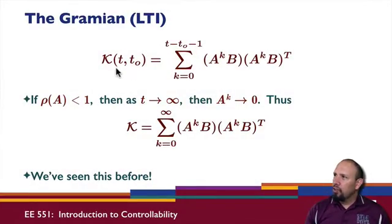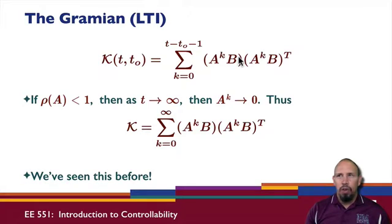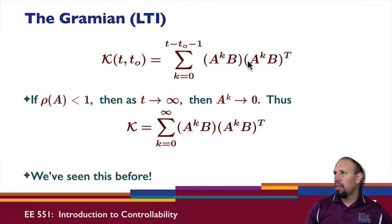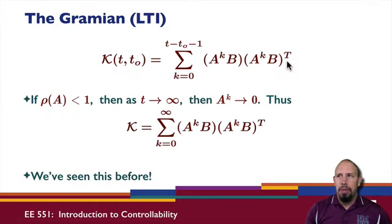We can show that the Gramian from t0 to t can be written as the sum from k equals 0 to t minus t0 minus 1 of A to the power k times B, times the transpose of that quantity. This is for the LTI system. We can define this for any system — stable, unstable, whatever. Rather than forming the control map and computing the Gramian from it, we can compute it directly from the A and B matrices.